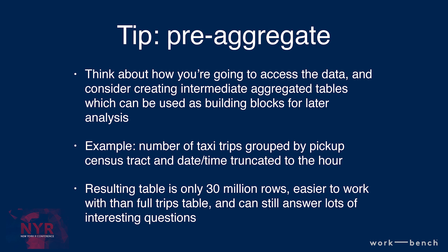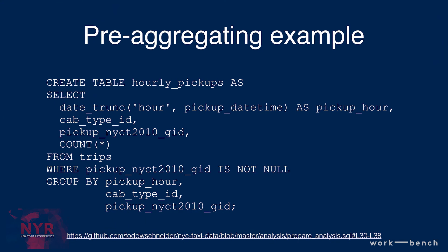Another tip is what I call pre-aggregation. I gave an example with the taxi maps where we truncated latitude and longitude. Another example: you have the full taxi data with over a billion rows, which is very unwieldy. You can make an intermediate table that is, for each census tract and each timestamp truncated to the nearest hour, how many trips were there. That ends up being about a 30 million row table — much easier to work with, still useful for a lot of the analysis, and you save a lot of time creating it once.